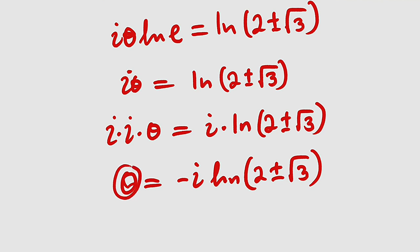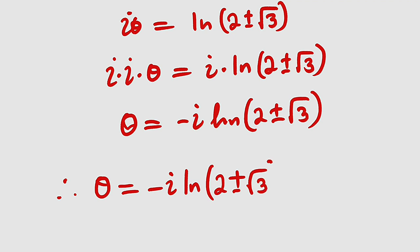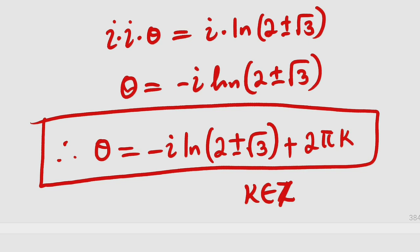Remember, when you take the cosine of an angle, adding multiples of 360 degrees (2π) yields other valid solutions. Therefore, the general solution is theta equals negative i times the natural log of (2 plus or minus the square root of 3) plus 2πk, where k is an integer. This is the general solution to cosine theta equals 2 in the complex number world. You can separate it into the plus and minus cases, but we can leave it in this form.